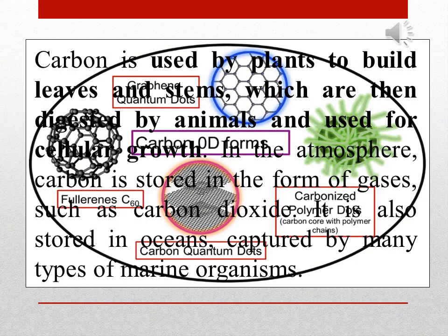Carbon is used by plants to build leaves and stems, which are then digested by animals and used for cellular growth. In the atmosphere, carbon is stored in the form of gases such as carbon dioxide. It is also stored in oceans by marine organisms.